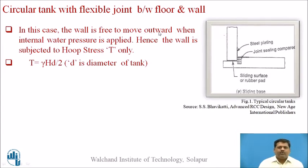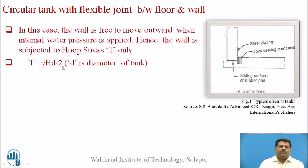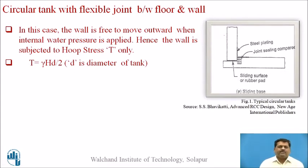The wall is free to displace or move outward when internal water pressure is applied; hence the wall is subjected to hoop stress only — that is, circumferential stress. The hoop tension T = γ·H·D/2, where γ is the unit weight of water, H is the height of water, and D is the diameter of the tank. The tank is designed for this hoop tension only, making the circular tank with a flexible joint a very simple structure for design.